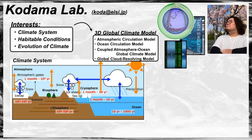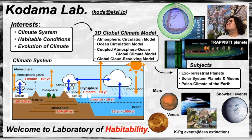Recently, we started developing coupled atmosphere-ocean global climate models and global cloud-resolving models to apply to environments different from Earth's. We use supercomputers like Fugaku and Earth Simulator 4 at JAMSTEC. Our research topics include climate and habitability of extraterrestrial planets like the TRAPPIST-1 system, solar system planets and moons, early Mars and early Venus climate, subsurface oceans of icy moons, and past climate events like the snowball Earth state and mass extinction events.